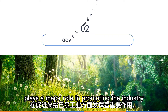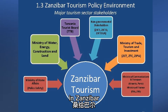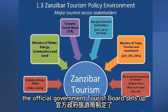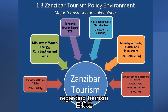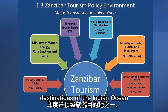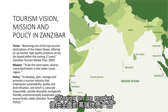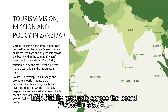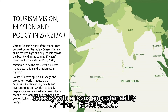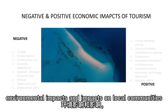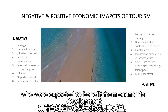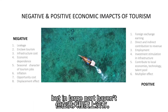The government plays a major role in promoting the industry in Zanzibar. The official government tourist board sets out the vision of becoming one of the top tourism destinations of the Indian Ocean, offering an upmarket, high-quality product within the coming decades with a focus on sustainability. The increase in tourism has led to significant mixed economic and environmental impacts, and impacts on local communities who were expected to benefit from economic development but in large part haven't.